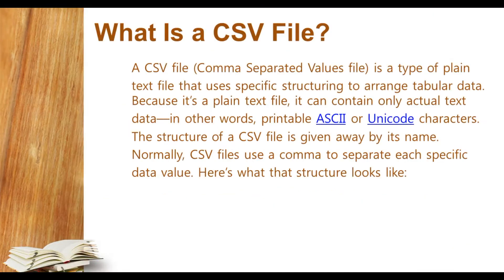Let's begin with what is a CSV file. CSV file is known as a comma-separated value file. It is a type of plain text file that uses a specific structuring to arrange tabular data. Because it is a plain text file, it can contain only textual data — actual data. You can understand that a CSV file is like an Excel file in which data is formatted in a tabular format, either in rows or columns, and it contains only actual text — printable content like ASCII code or Unicode characters.